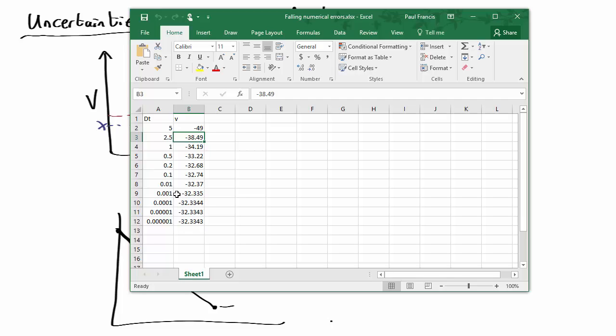So by the time you're down at about 0.001 of a second, the answers are not really differing very much to several decimal places. So we can be pretty confident that the answer is very close to minus 32.3343. Maybe there's still some error at the 6th or 7th decimal place, but we seem to have nailed the answer pretty accurately.